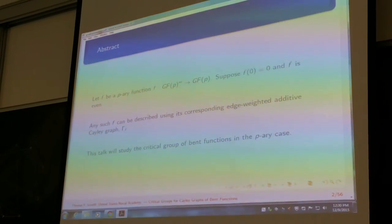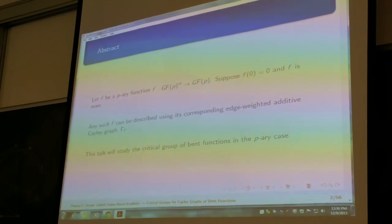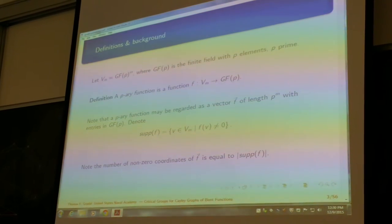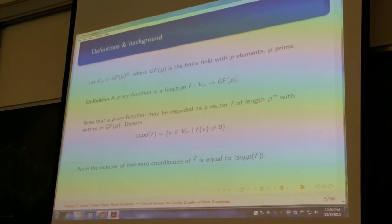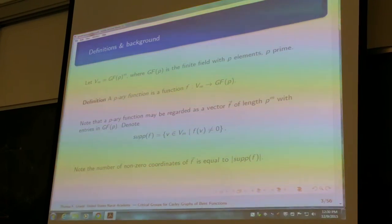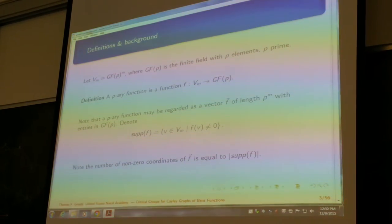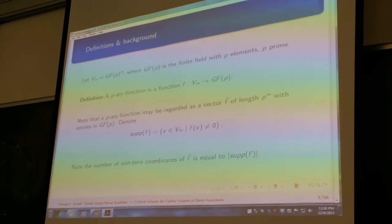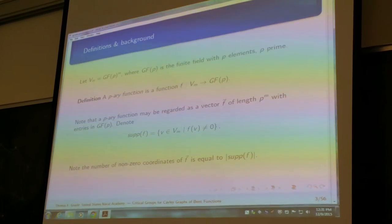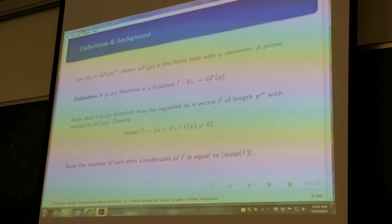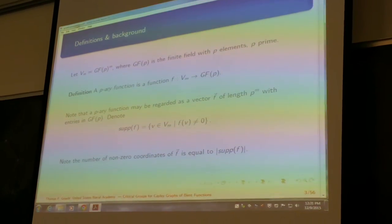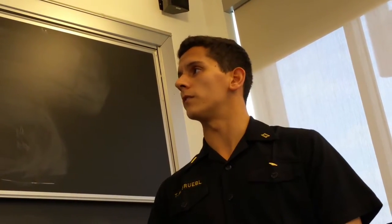We're going to study the critical group of bent functions in the p-ary case. Moving into some definitions and background, the support of f is equal to the set of all vectors in v sub m such that f(v) is not equal to 0. Also note that the number of non-zero coordinates of the vector representation of f is the size of the support of f.